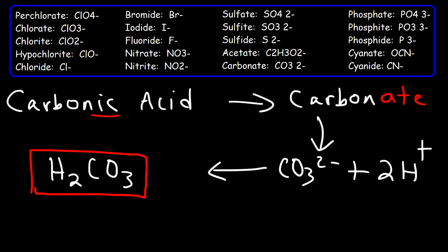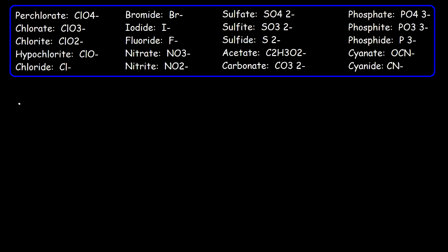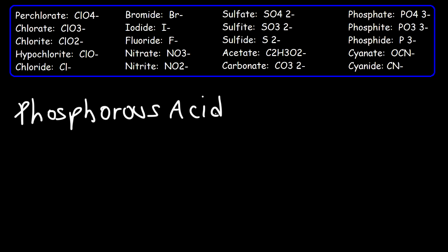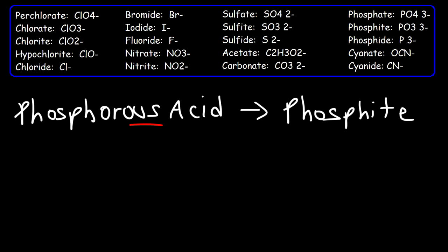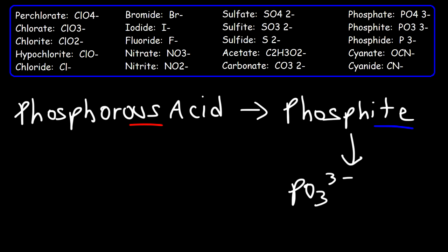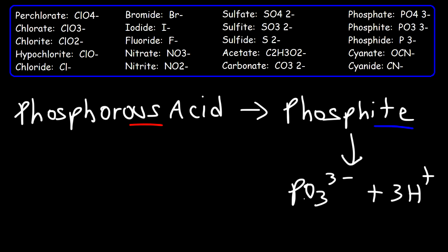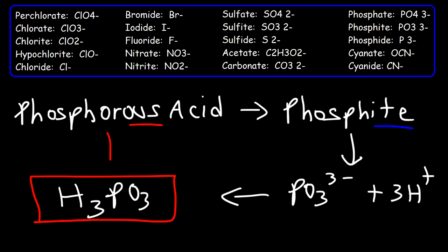Let's try another example: phosphorous acid. Notice the suffix '-ous'. We replace that with '-ite', giving us the polyatomic ion phosphite. Phosphite is PO3³⁻. We have a minus three charge, so we're going to add three hydrogen ions. The chemical formula is H3PO3 — that's the formula for phosphorous acid.